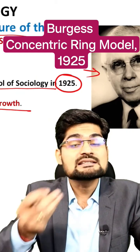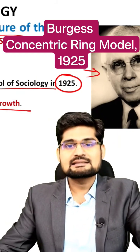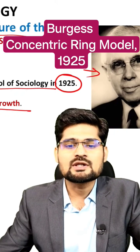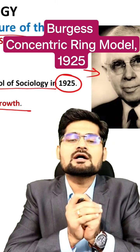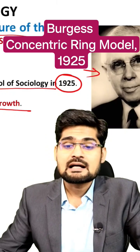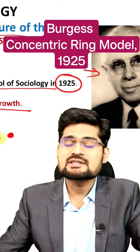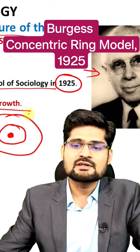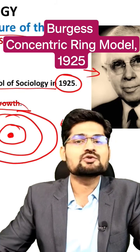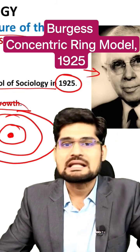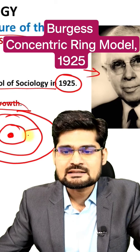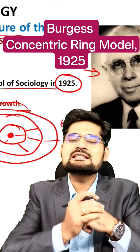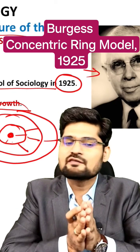He says that concentric zonation, or the zonal model of the city, is where urban growth happens. It means a city has a concentration at a particular point, and alongside there are different zones which can be plotted through a concentric circle model. Between these circles, these areas have different land uses. This is the basic idea of his work.